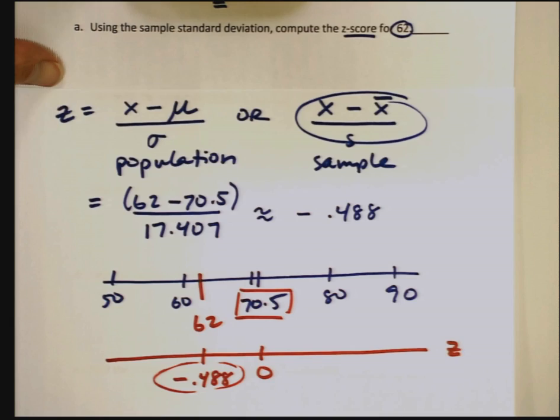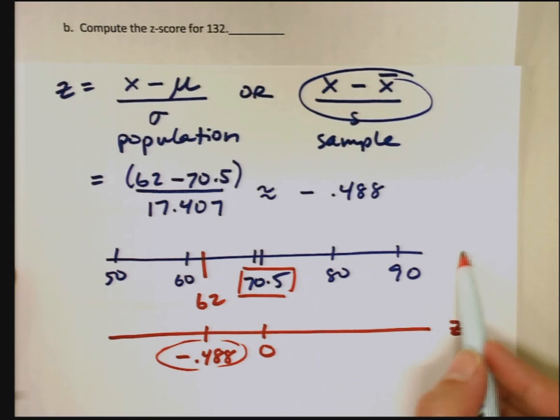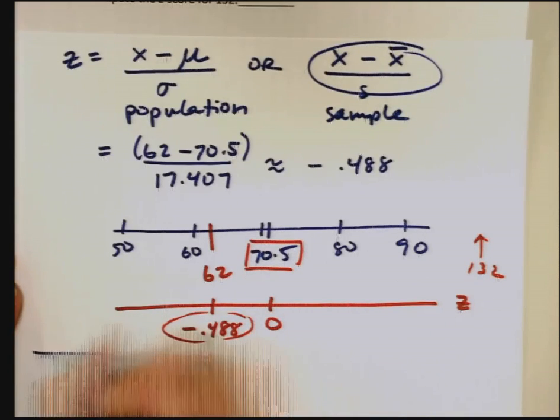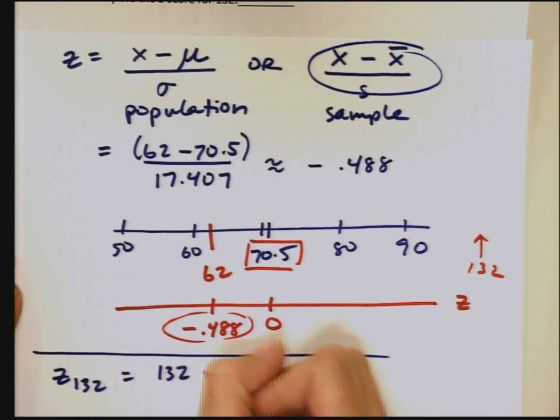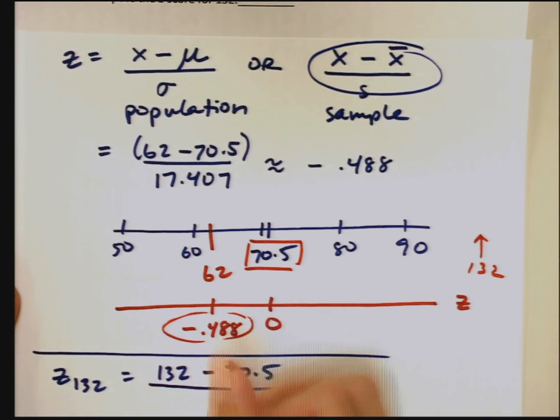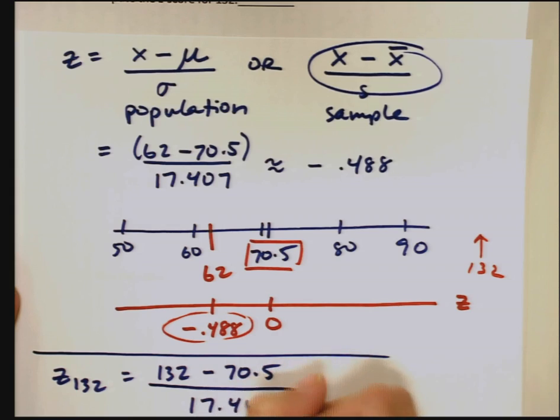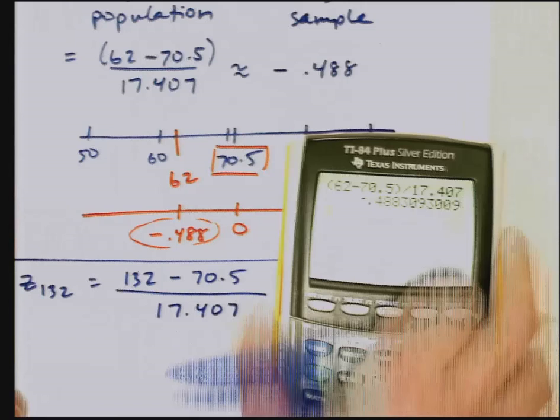Let's do the next computation. The next one is the z-score for 132. 132 lives way over here somewhere. Let's figure out its z-score. So the z-score for 132 is the score minus the mean. That's the deviation, how far it is from the mean, divided by the standard deviation. We're using that 17.407 that we got from the calculator.